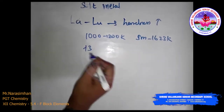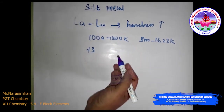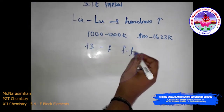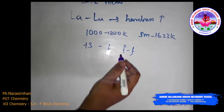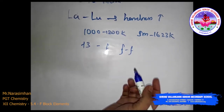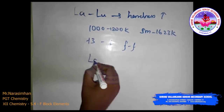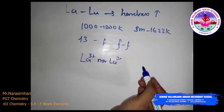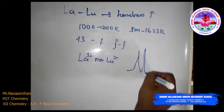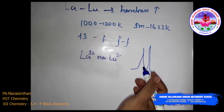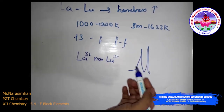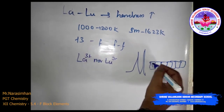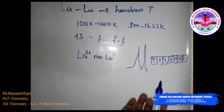Many trivalent (+3) lanthanoids show color in both solid state and aqueous solution. The color is attributed to the presence of F electrons undergoing f-f transitions (a spectroscopic property). The presence of unpaired electrons makes them paramagnetic. Neither La3+ nor Lu3+ ions show any color, but the rest do. The absorption bands are narrow, and the lanthanoid ions are overall paramagnetic in nature, meaning they have at least one unpaired electron.